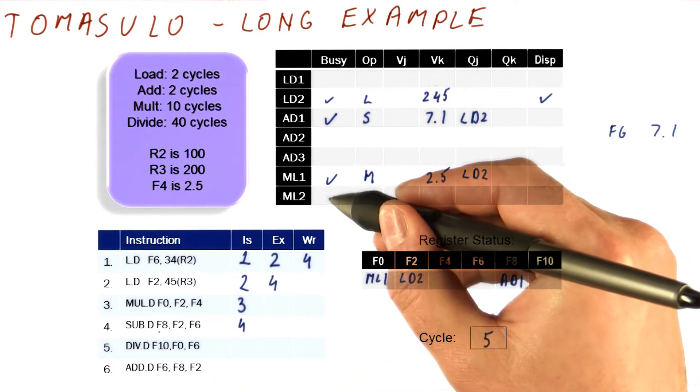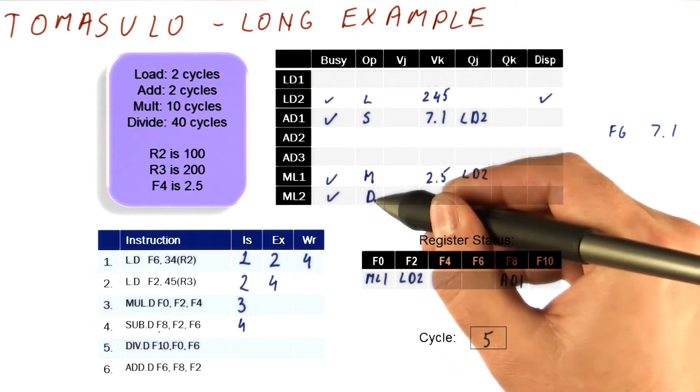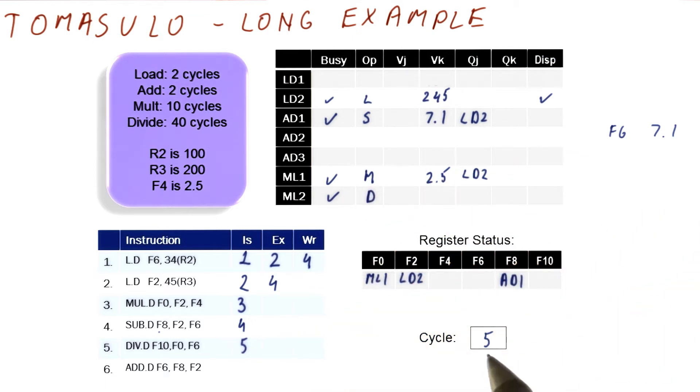This divide is going to look for this type of unit and find it. So we're going to mark that ML2 is now full. We're going to say that this has issued in cycle five.